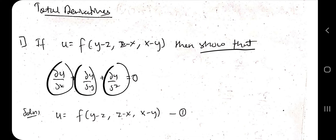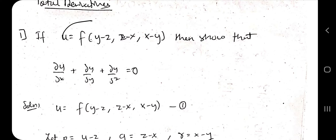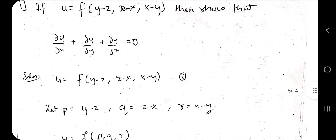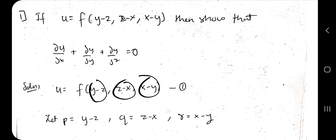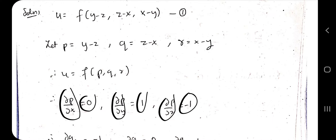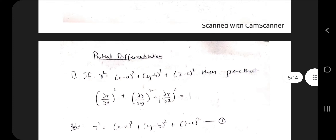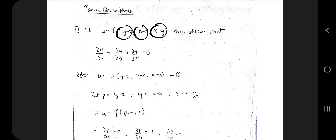Now let's look at the type of question asked in total derivatives. Given u = f(y−z, z−x, x−y), show that ∂u/∂x + ∂u/∂y + ∂u/∂z = 0. First find ∂u/∂x, ∂u/∂y, and ∂u/∂z. There's a slight difference here because the arguments are composite. Set p = y−z, q = z−x, r = x−y. Then: ∂p/∂x = 0, ∂p/∂y = 1, ∂p/∂z = −1, and similarly for q and r. These values will be used in the chain rule expansion.